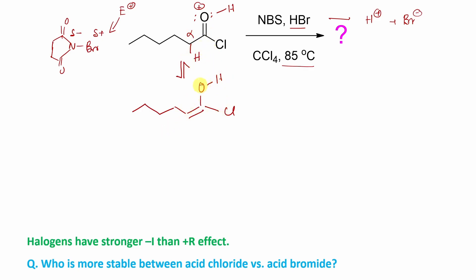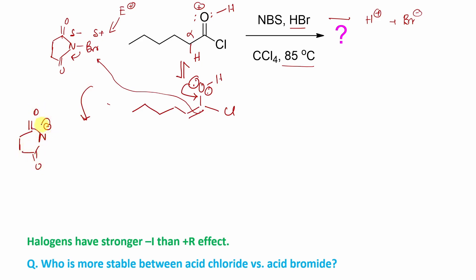Enols are nucleophilic because of this conjugation. Among these two lone pairs, one will push and another will attack here. The consequence is that one part will be the N-minus, which is doubly stabilized by resonance — two carbonyl groups help to stabilize this nitrogen anion. And here, in this case, it is like alpha-halocarbonyl preparation — here, alpha-bromo.